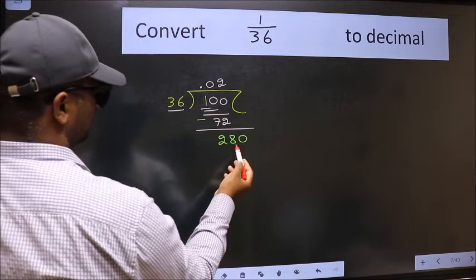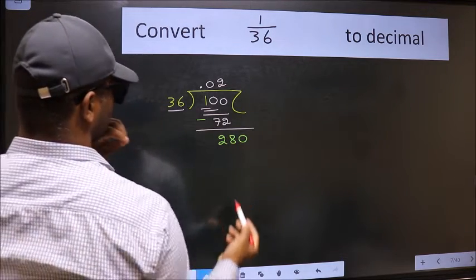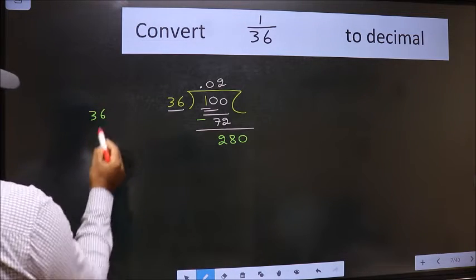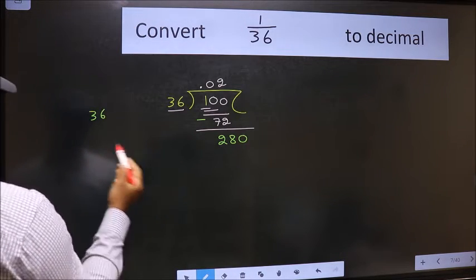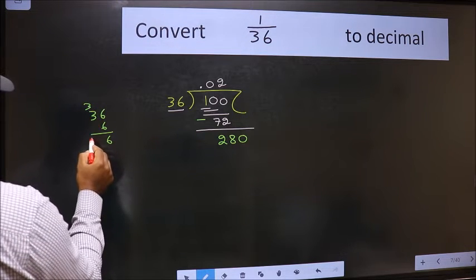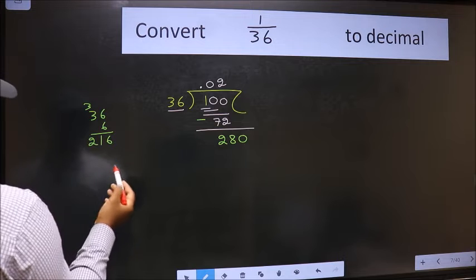So 280. A number close to 280 in the 36 table. Let us check with 6. 6 times 6 is 36, 6 times 3 is 18, carry 2, gives 216. No.